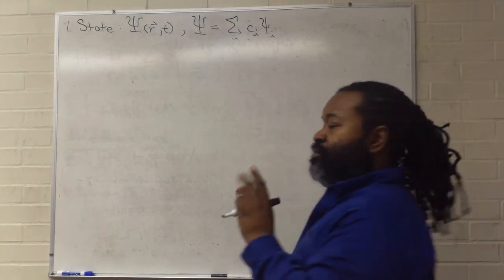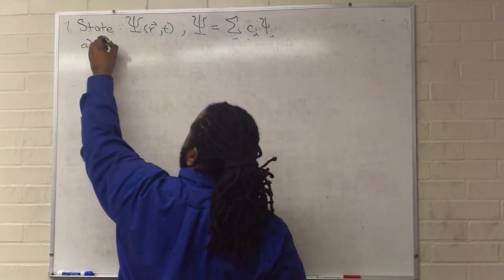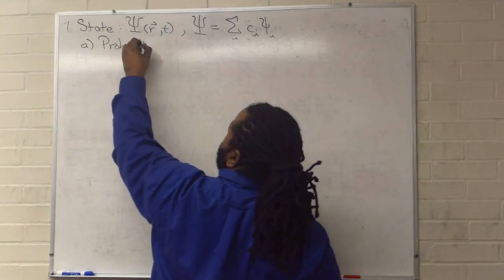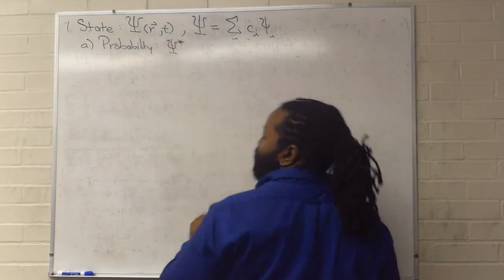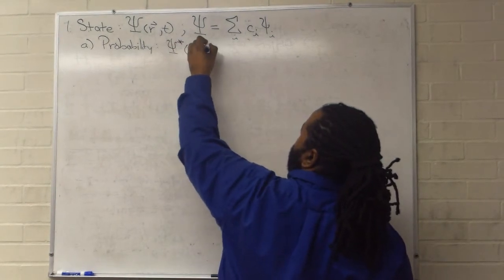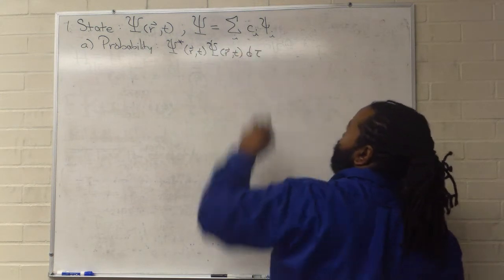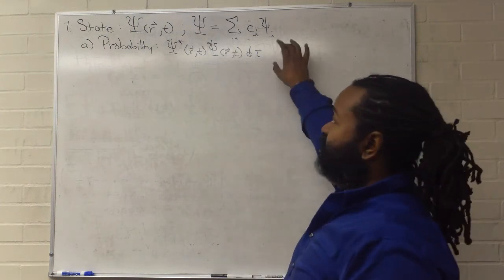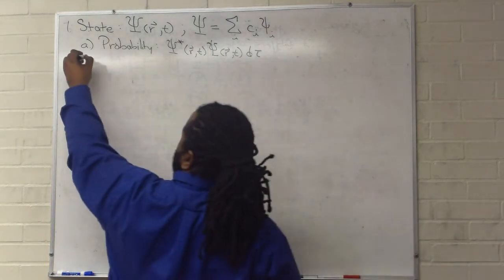Now there are two things to note about this. The first is that you can define a probability. It states that the complex conjugate of the function along with the function itself with some standard differential specifying space gives you the probability of finding the system in that given state.